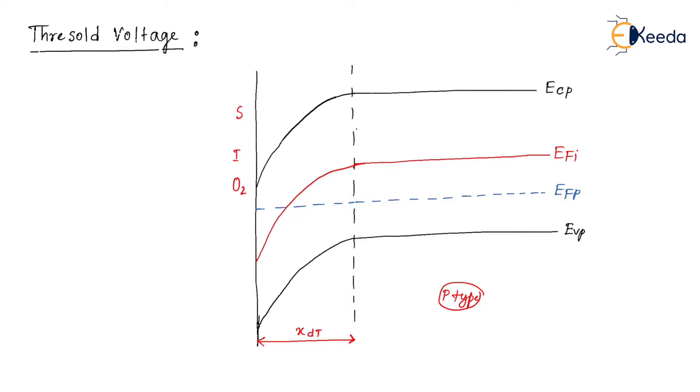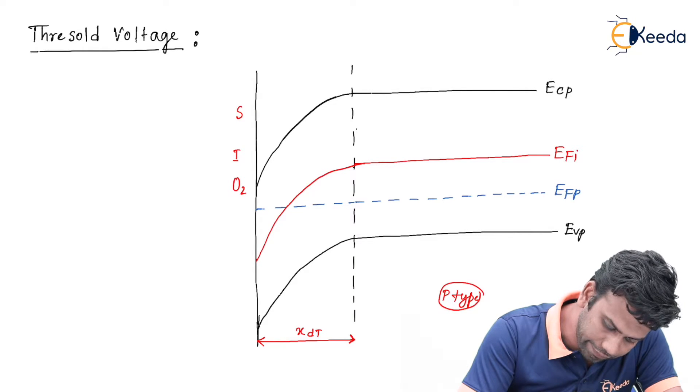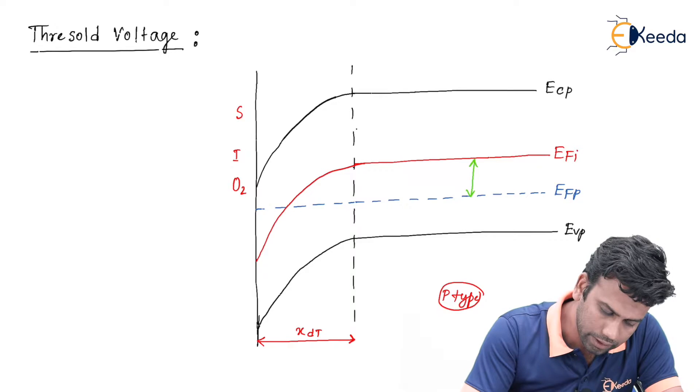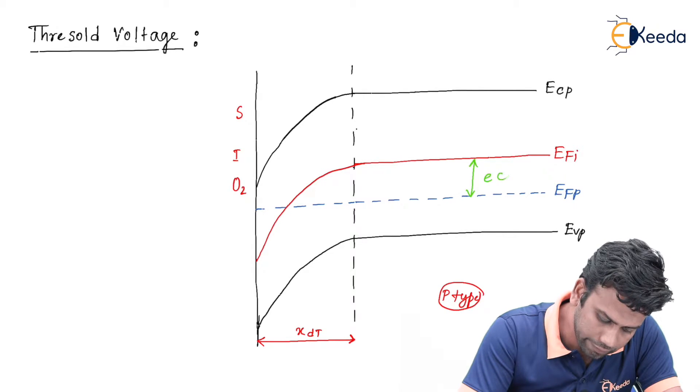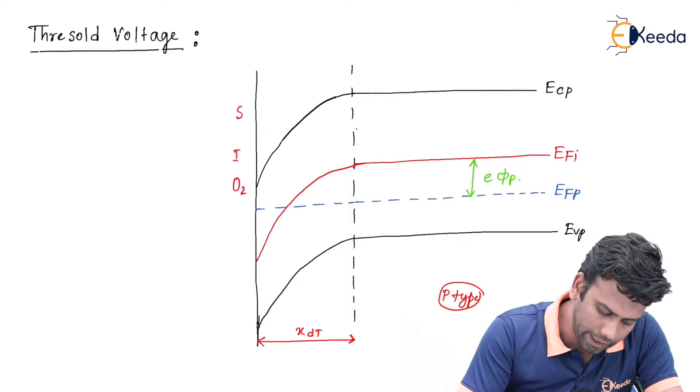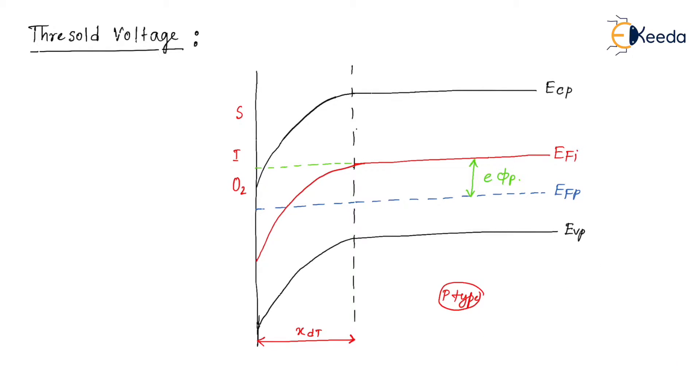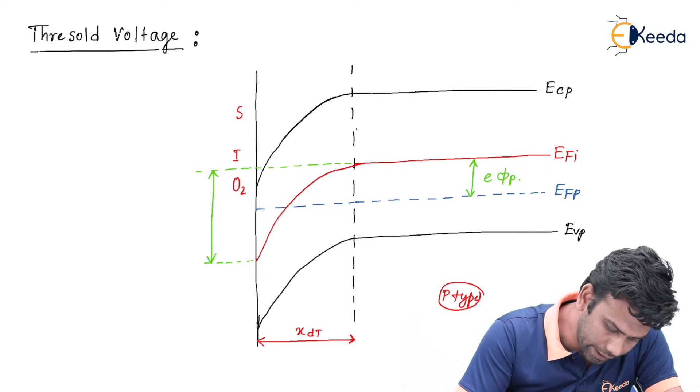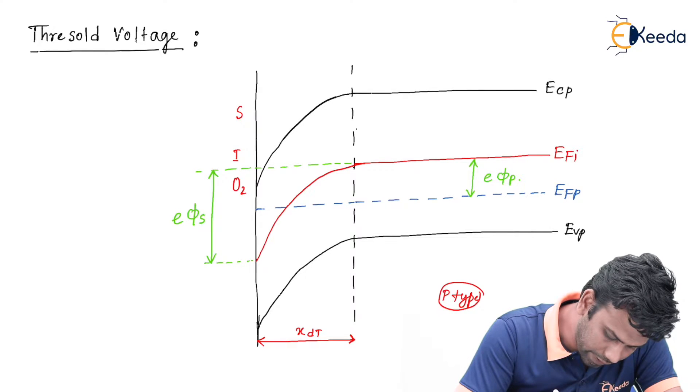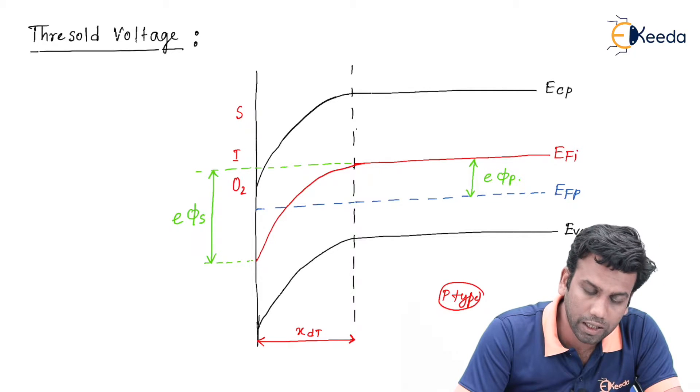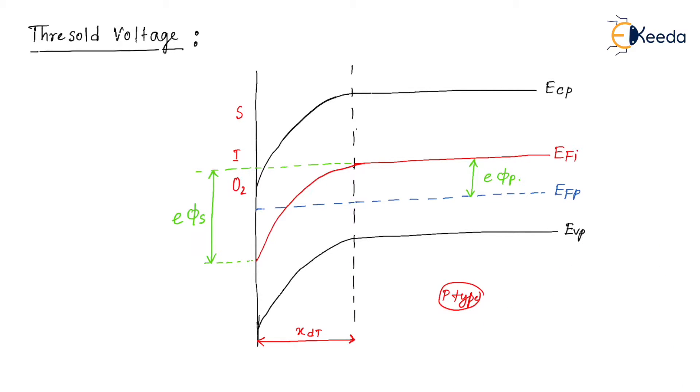Now, this distance, the gap between the EFI and the EFP in the bulk of the material, is denoted by EFIp. If I draw a straight line, then this gap or the potential difference is called the surface energy or EFIs, that is the difference between the intrinsic Fermi level in the bulk and in the surface.